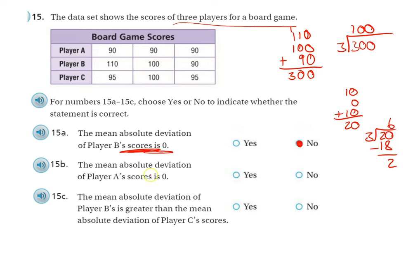Okay, number 15B: the mean absolute deviation of player A's score is zero. Well, player A, we do the same thing. 90, 90, 90. Find the mean first. That's 270.